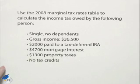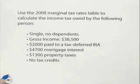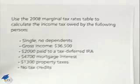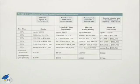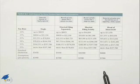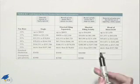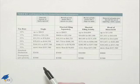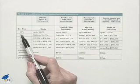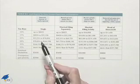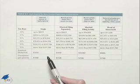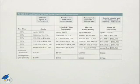We're going to begin by noting that the tax table you can find in your textbook is fairly involved. It has to do with tax rates, how your filing status is, standard deduction, and exemptions.